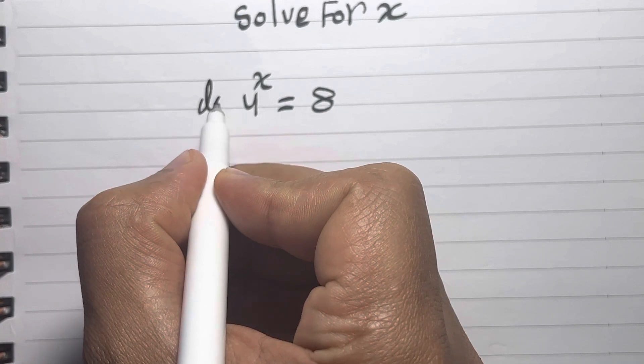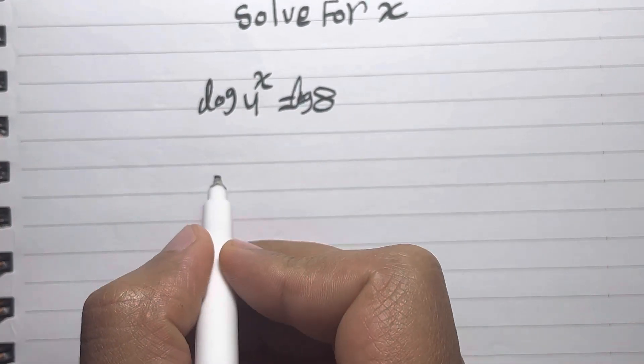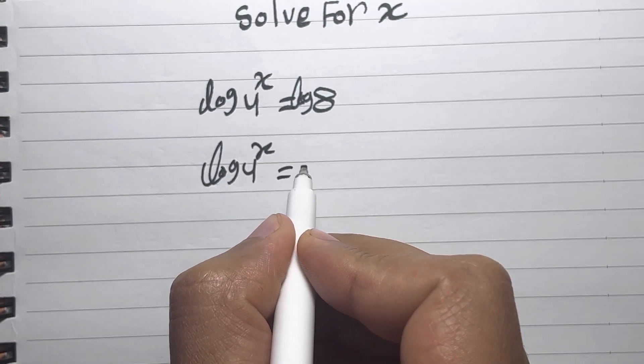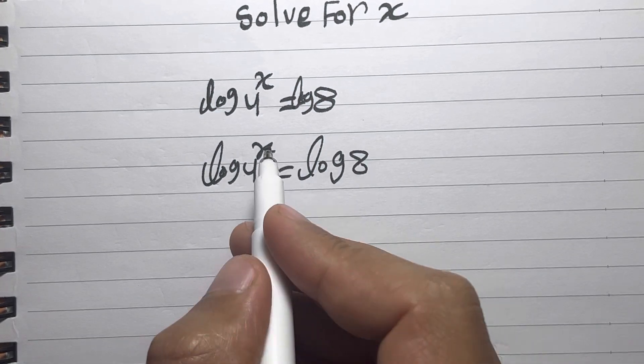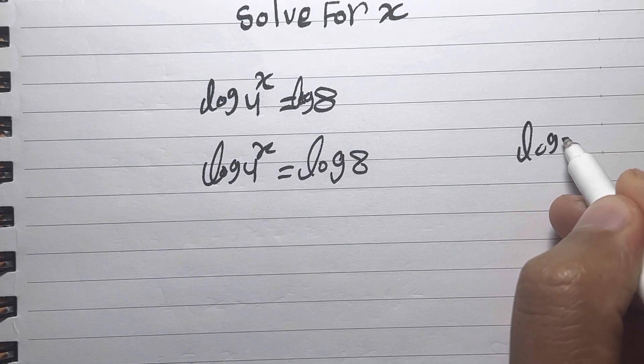Here is the log for both sides, so log of 4^x equals log of 8. We already know this identity: if you have log x^n, we can put the n beside the log, so it would be n log x.